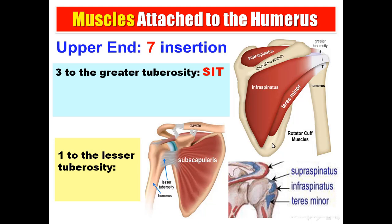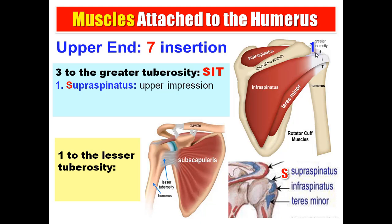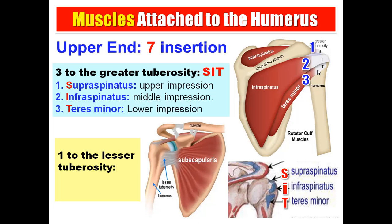Regarding muscle attachment, the upper end of the humerus gives insertion to seven muscles. The greater tuberosity gives insertion to three muscles — remember SIT: S is supraspinatus at the upper impression, I is infraspinatus at the middle impression, T is teres minor at the lower impression. The lesser tuberosity gives insertion to only one muscle, which is the subscapularis.